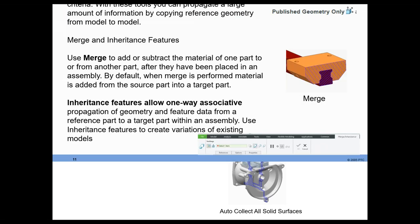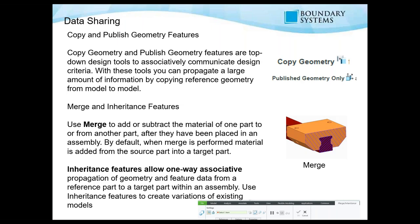The next one is data sharing. We're going to talk about copy and publish geometry features. Copy and publish geometry features are top-down design tools that show the ability to communicate design criteria. In the example we'll use today, we'll be working in a train model and we're going to take information from one skeleton model and put it in another skeleton model using these copy and publish geometry tools. It's the perfect way to get information from one level or one assembly to another, while keeping the link between them.